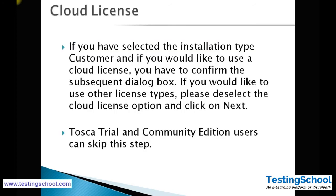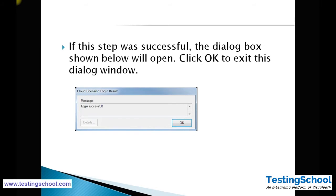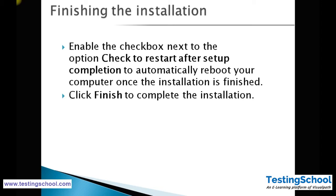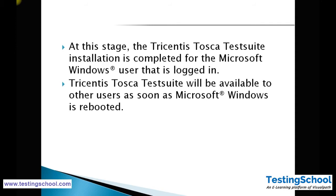For cloud licenses, if you selected the installation type as Customer and would like to use the cloud license, confirm the subsequent dialog boxes. The cloud licensing will connect to the cloud server and validate your username and password. Enter your access data; once you enter a valid username and password, you will see a login successful message. After setup is completed, reboot the system by clicking the Finish button. Tosca installation is then complete.